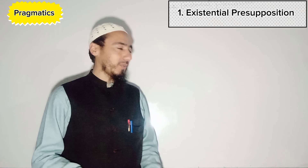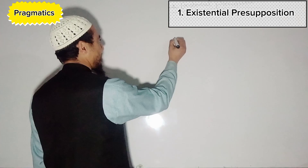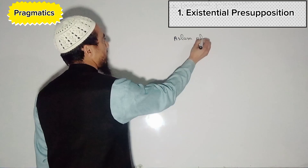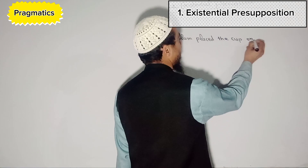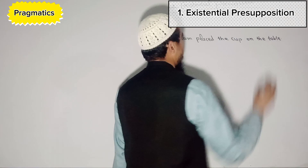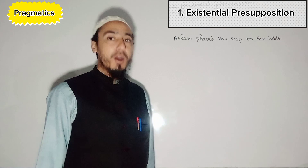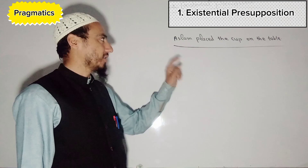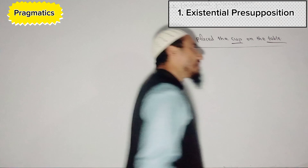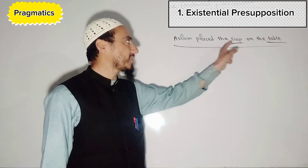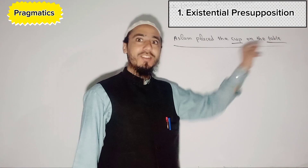For example: 'Aslam placed the cup on the table.' This is an utterance, a statement. The presupposition of this utterance is that the cup is an entity which exists, and the table is an entity which exists. So here, the speaker assumes that both the cup and the table are entities which exist.